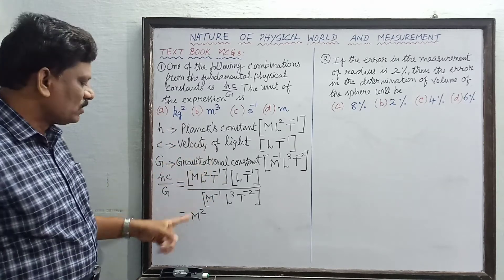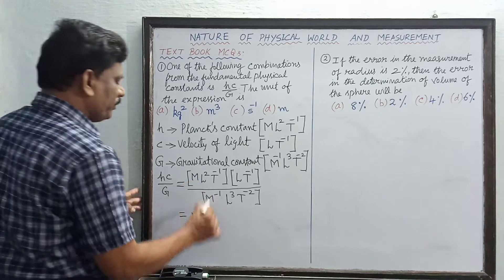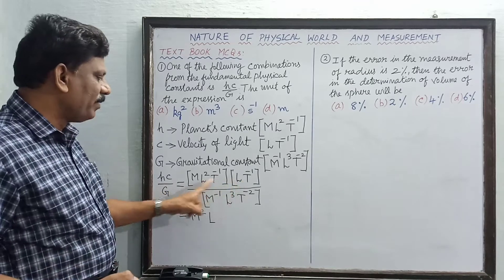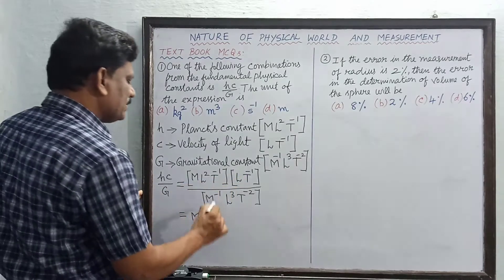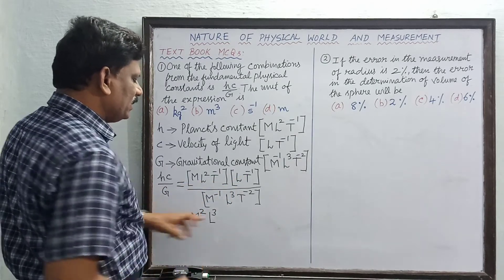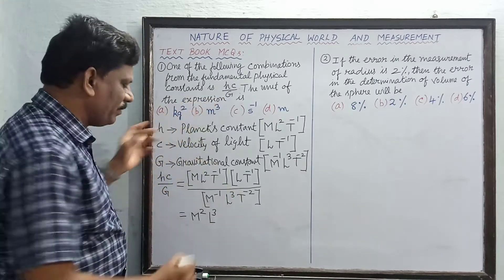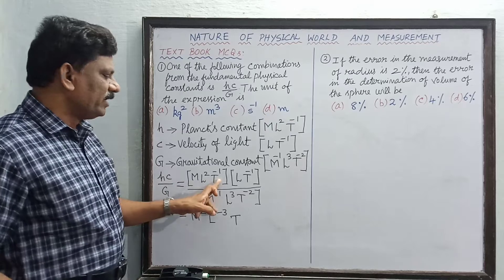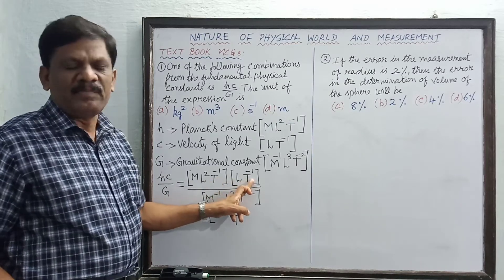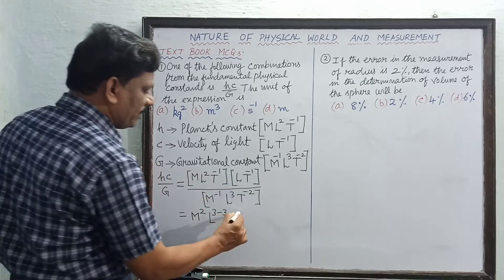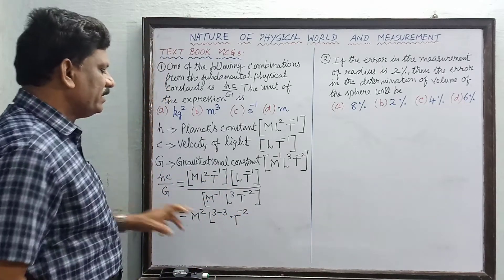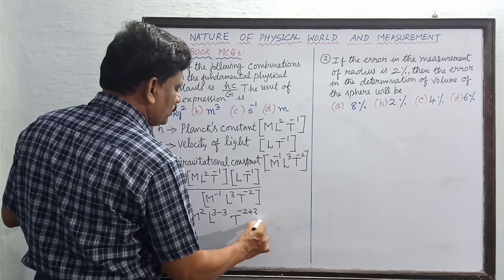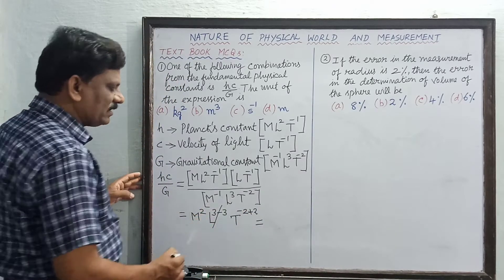For L: we have L² from h and L¹ from c, giving L³ in the numerator, and L³ from G in the denominator, so L³⁻³ = L⁰. For T: T⁻¹ from h multiplied by T⁻¹ from c gives T⁻² in the numerator, and T⁻² from G in the denominator comes up as T⁺², giving T⁻²⁺² = T⁰. So the result is M² L⁰ T⁰.